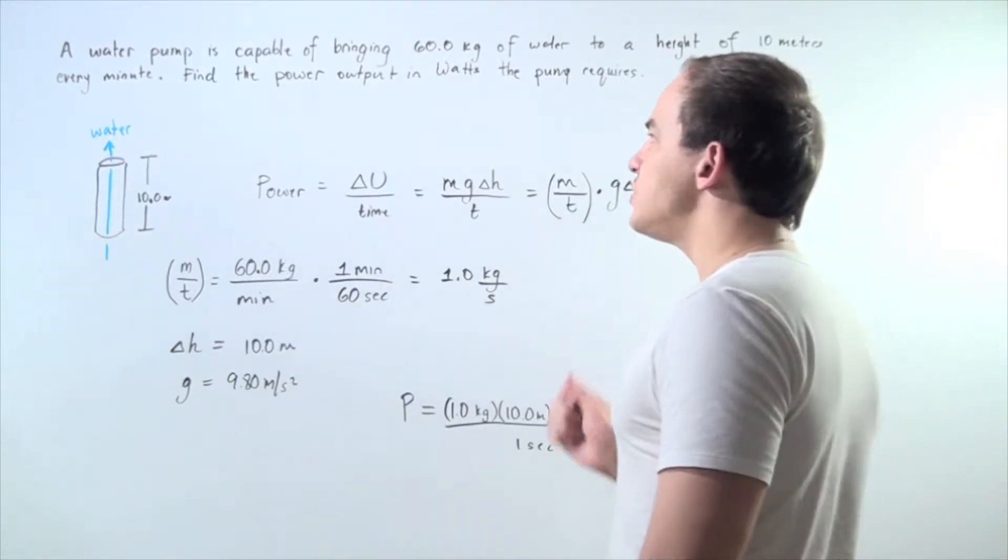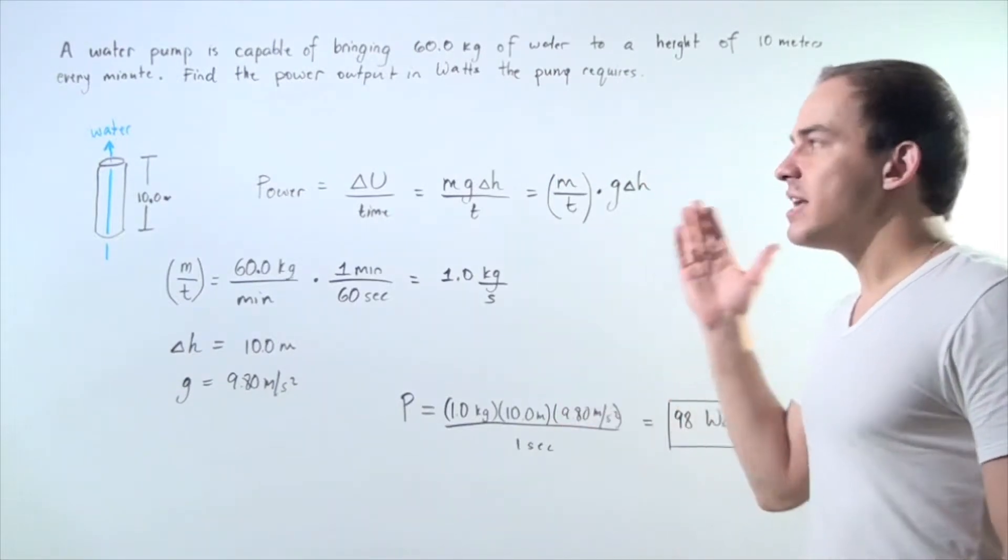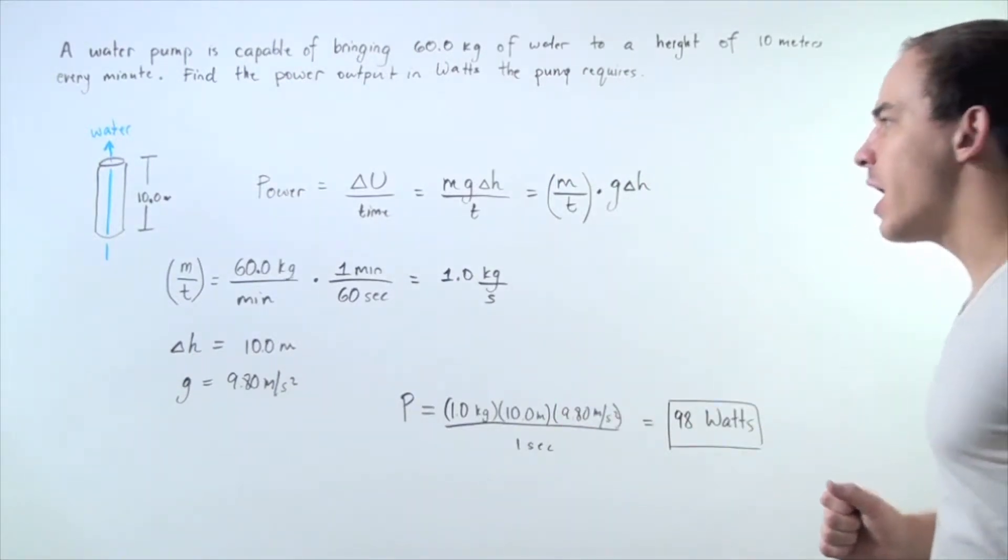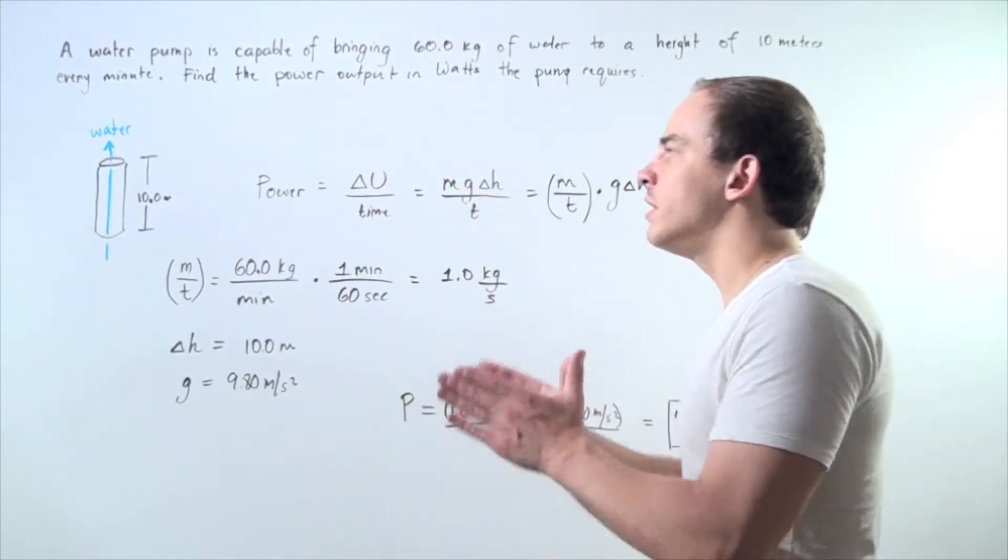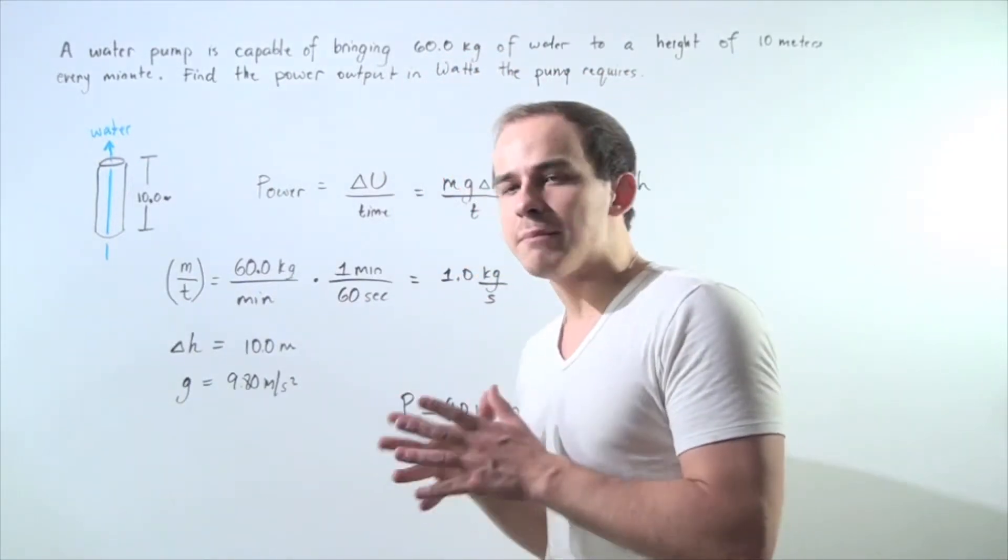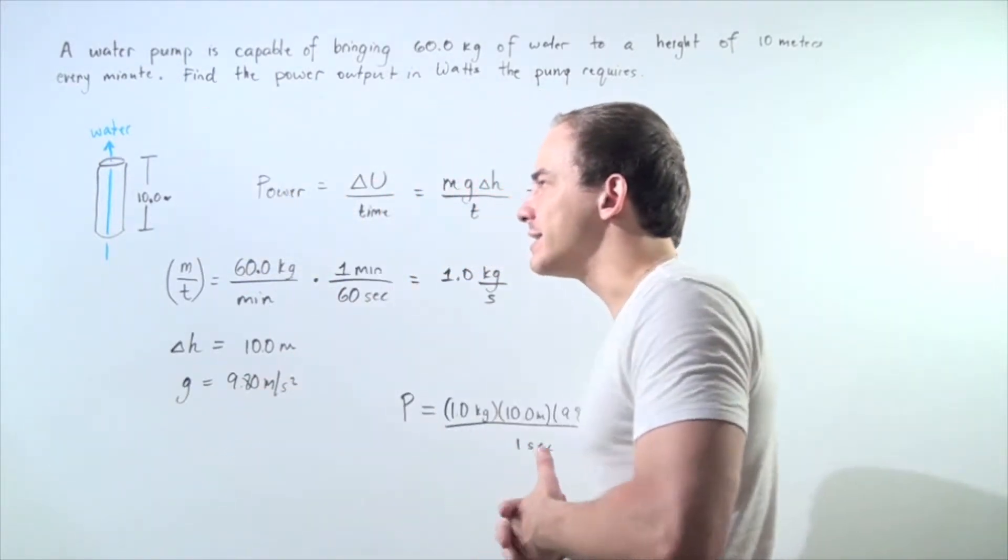Using this information, we want to find the power output in watts that this type of pump requires. Here we have a pump, and the pump is capable of bringing 60 kilograms of water up a height of 10 meters every single minute.